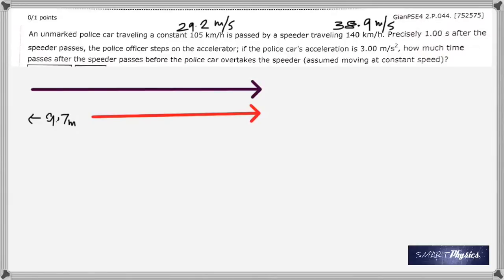So now the cop has to move over this distance or displacement in the same time taken by the speeder to move over this much. So let's assume that the time that they take is t seconds.